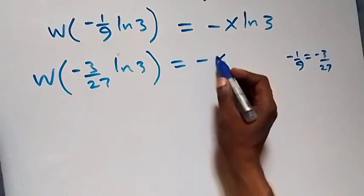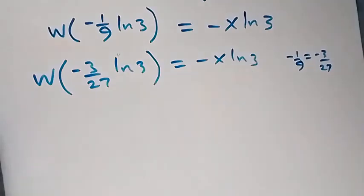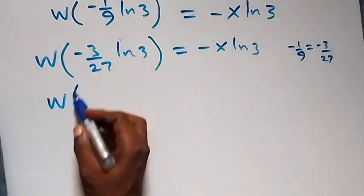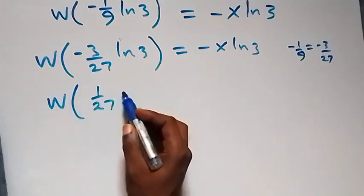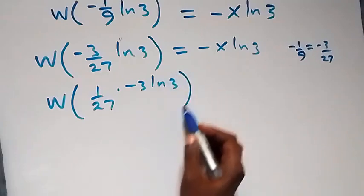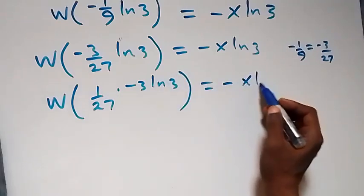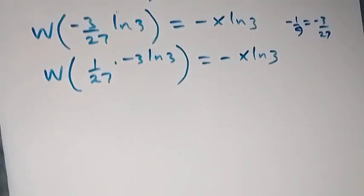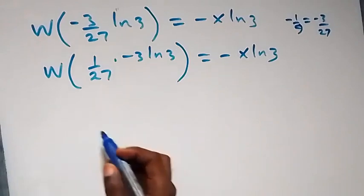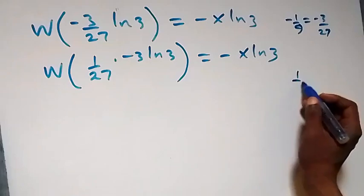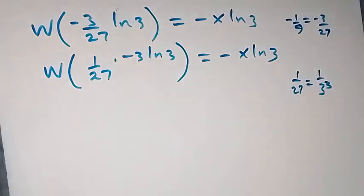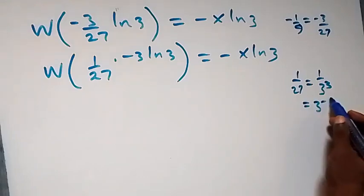So we have W of minus 3 over 27 ln 3, which equals minus x ln 3. Don't forget to give a thumbs up and subscribe — it means a lot. We can also write this as W of 1 over 27 times minus 3 ln 3, which equals minus x ln 3. And 1 over 27 can be written as 1 over 3 raised to power 3.